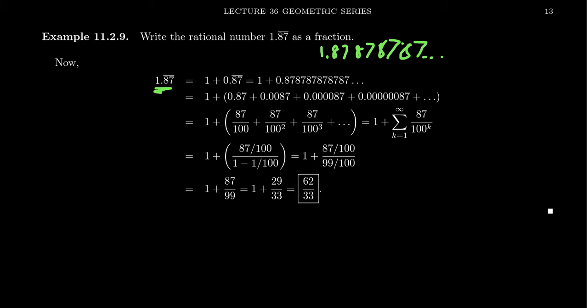If you take this number 1.87 repeating, it can be broken up into your whole number part 1 and your decimal part 0.87 repeated. 0.87 repeated means 0.87878787 after the decimal place.